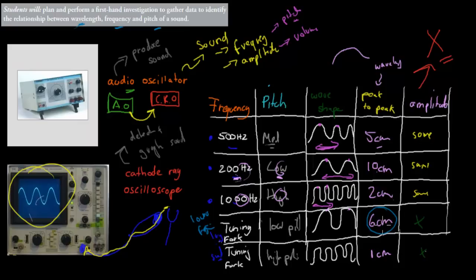A longer wavelength means lower frequency, and lower frequency also means lower pitch. The small tuning fork will have a higher frequency, shown by the smaller wavelength, which produces a higher pitch. So the whole idea of the experiment is to show that wavelength, frequency, and pitch are connected — a high wavelength produces a low frequency and also a low pitch, whereas a low wavelength produces a high frequency and high pitch.